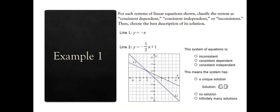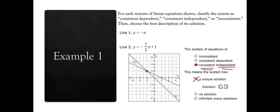Our first example: for each system of linear equations shown, classify the system as consistent-dependent, consistent-independent, or inconsistent. We have two lines labeled L1 and L2 that cross at a point. It's not inconsistent because there is a solution. So this is consistent-independent because it has exactly one solution. That unique solution is at the point negative 2, positive 2.